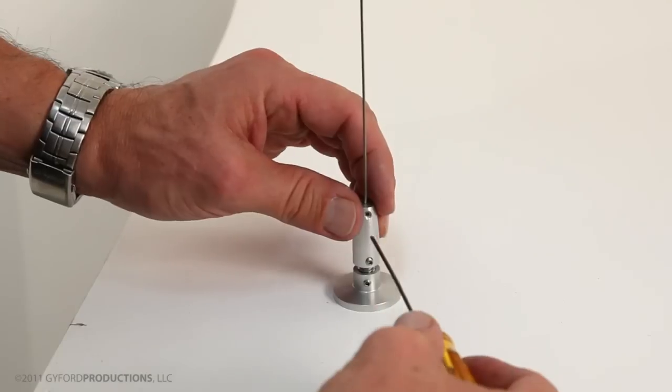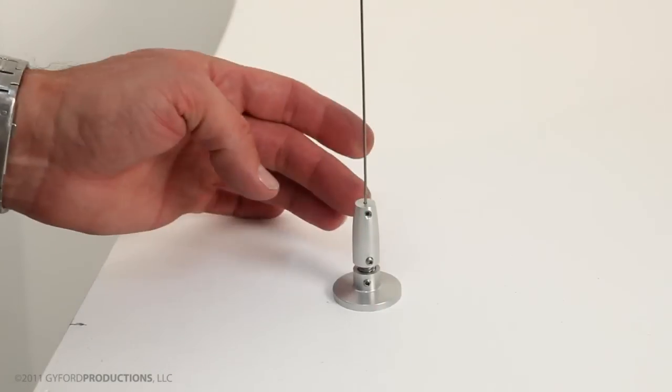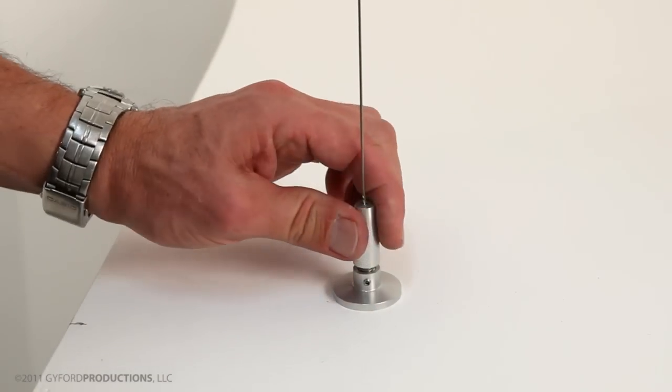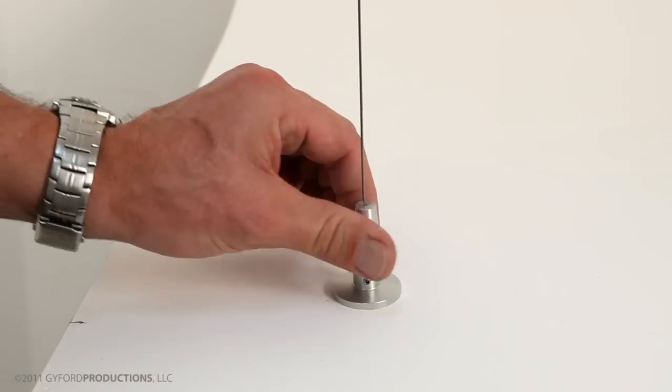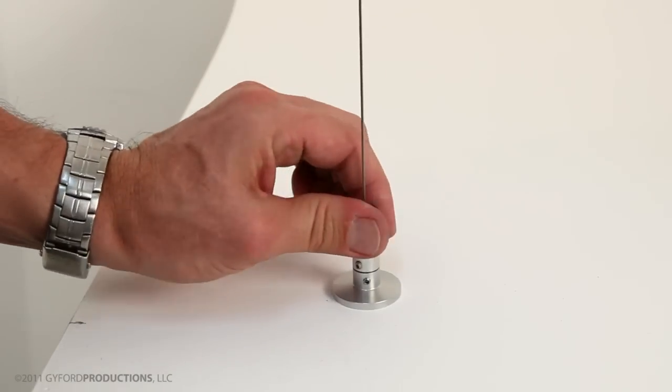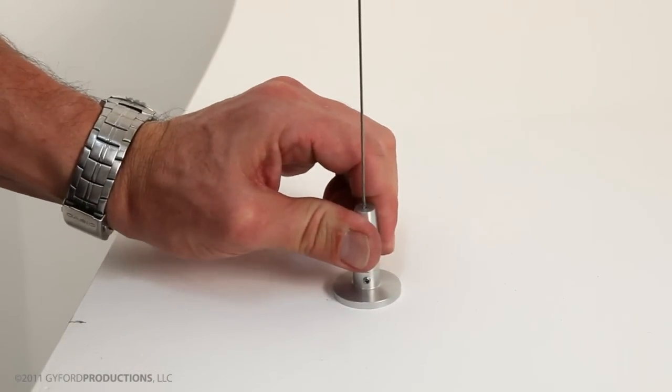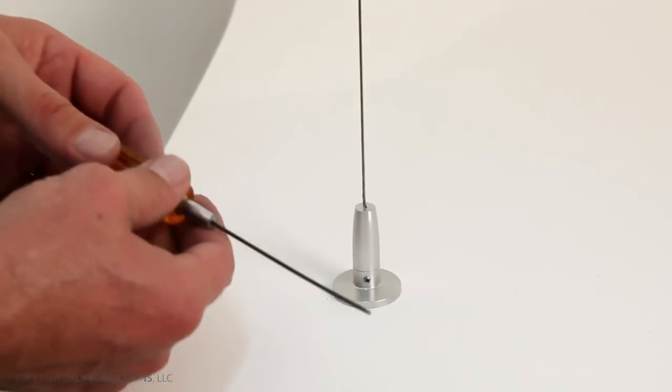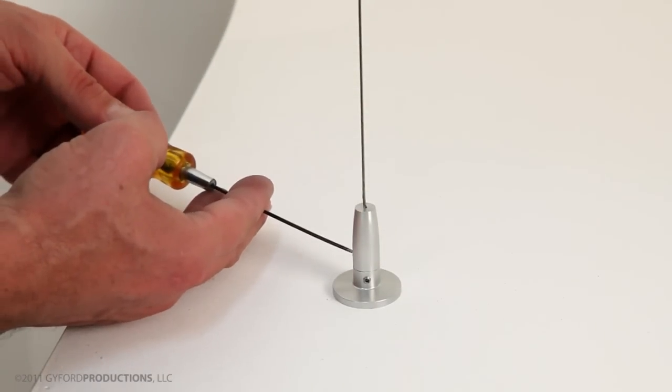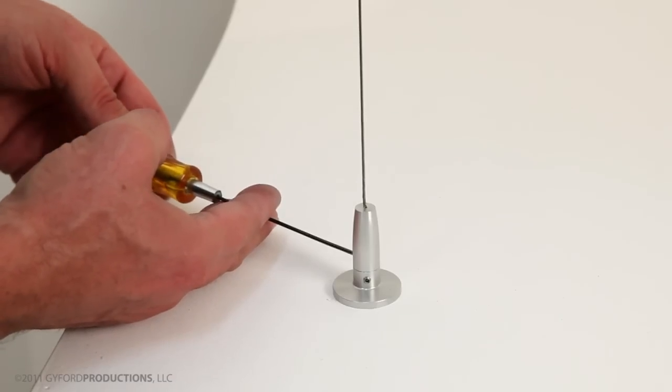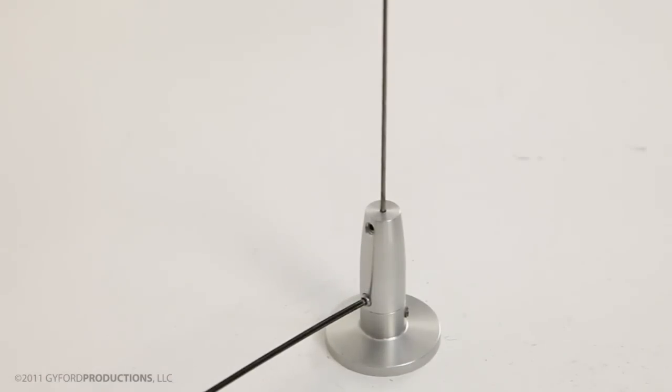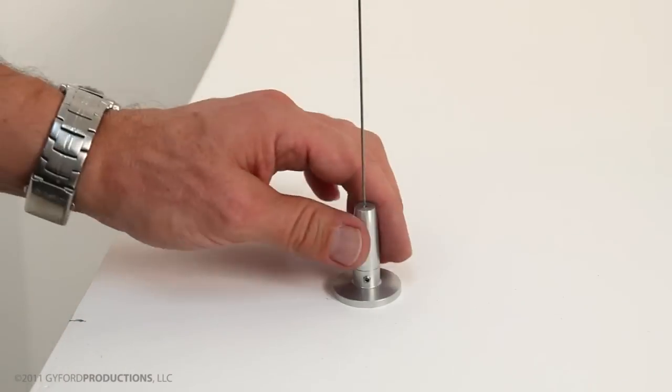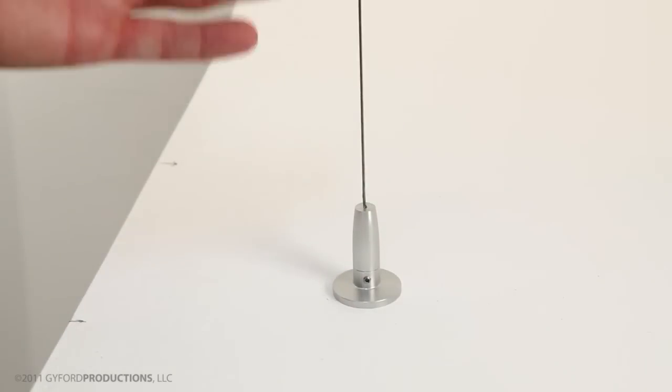Nice and tight, so it can't come out on you later. Now, we're going to begin tensioning our wire by rotating the turnbuckle body down onto the threads. When you get it tight, you'll know. The last step is to set the set screw at the bottom of the turnbuckle body against the threads. It doesn't have to be too tight, but enough to keep it from backing off later. And there we have a complete install.